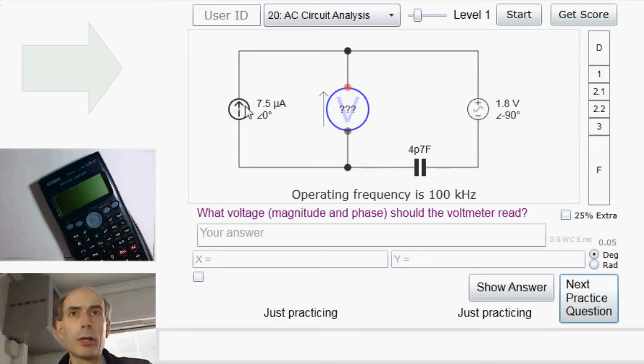Well, if I know the current through a capacitor, I can work out what the voltage across it is. It's just the current times the impedance of the capacitor. So that is 7.5 microamps at 0, multiplied by the impedance of this capacitor, which is 1 divided by J times omega, 2 pi times 100 kHz here.